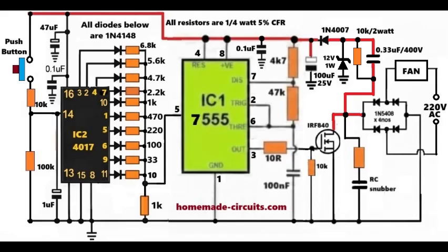MOSFETs work best with DC, so this avoids triac commutation problems and instability. Because of this, the fan remains stable even at very low speeds, and inductive load handling becomes clean and reliable.